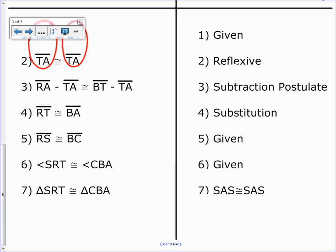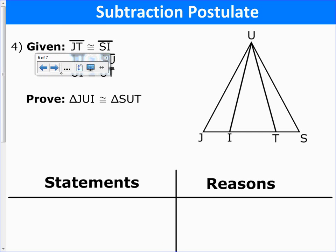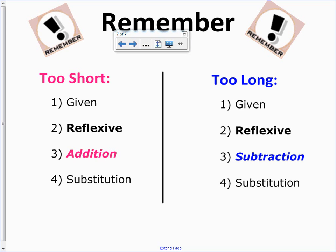Just flip to the back. We're going to skip this question. And then here is just some reminders. If your segment's too short, so if it's not the full side in the triangle, then you're going to need to use the addition postulate. You're going to probably add on that reflexive piece. Given, reflexive, addition, substitution. And if your segment's too long, you need to cut it down. Given, reflexive, subtraction, substitution. We'll be practicing that tomorrow in class.